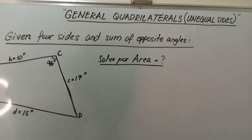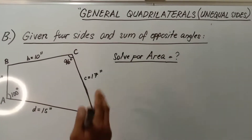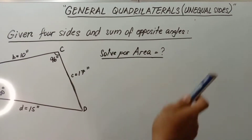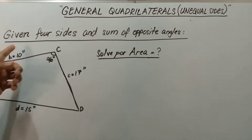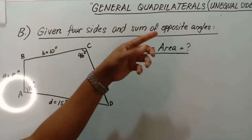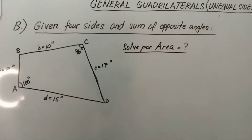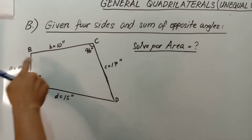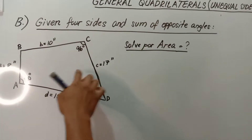Hey guys, I'm back again. Last time we studied general quadrilaterals given two diagonals, but today our topic is the second condition: given four sides and some opposite angles. Take note this is still general quadrilaterals with all sides unequal. Here is an example problem related to this condition.